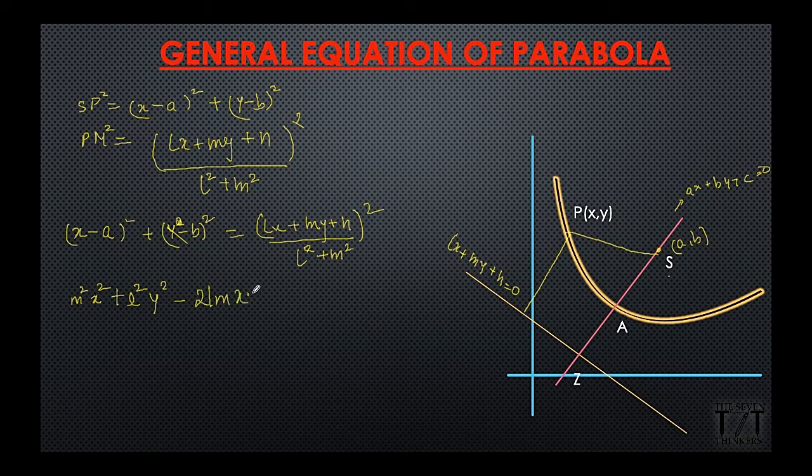So these are the first three important terms which we'll get by solving this equation but we're gonna get something more. The minus 2ax multiplied by l square plus m square, minus 2yb multiplied by l square plus m square, then we'll have 2nlx will have 2nmy and n but we don't want to get so much of it.